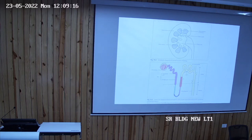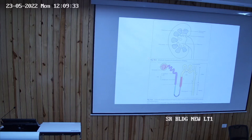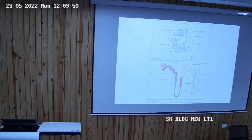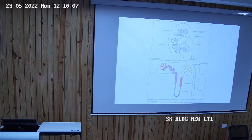The Bowman's capsule has two poles. One end through which the afferent arteriole enters and the efferent arteriole comes out is called the vascular pole. The other pole from which the tubules start is the urinary pole. From the urinary pole begins the proximal convoluted tubule, PCT, which is highly convoluted. Lower down is the straight part, so PCT has two parts: convoluted part and straight part.